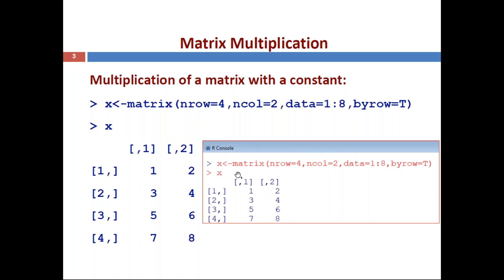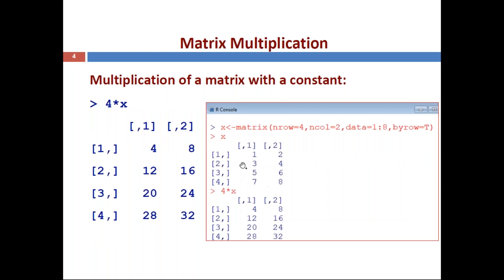Recalling some basic operations from the earlier lecture: multiplication of a matrix with a constant. We already created matrix x, so we can multiply it by a constant, and each and every element in the matrix will be multiplied by that constant. We already executed these in the earlier lecture, so here we are reviewing these operations.